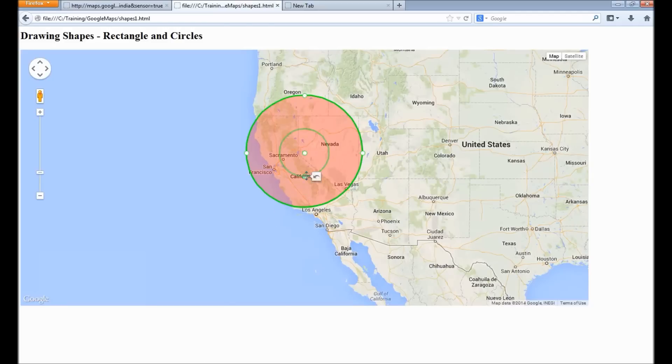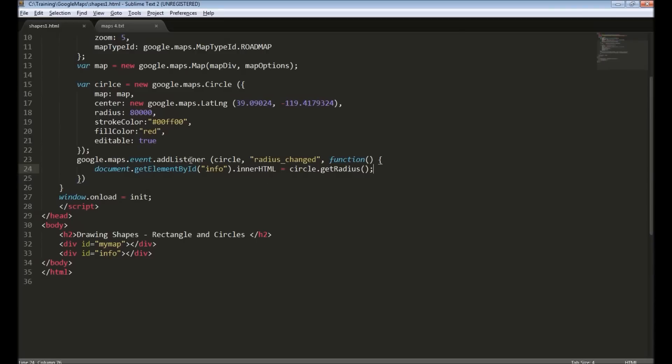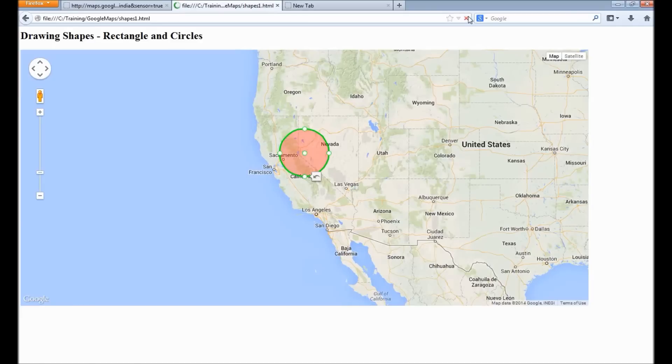There seems to be some issue. Let's see. Google.map.event - circle - addListener, circle, radius_changed, function, getRadius. Aha, the new circle object misspelled. OK, let's reload now.